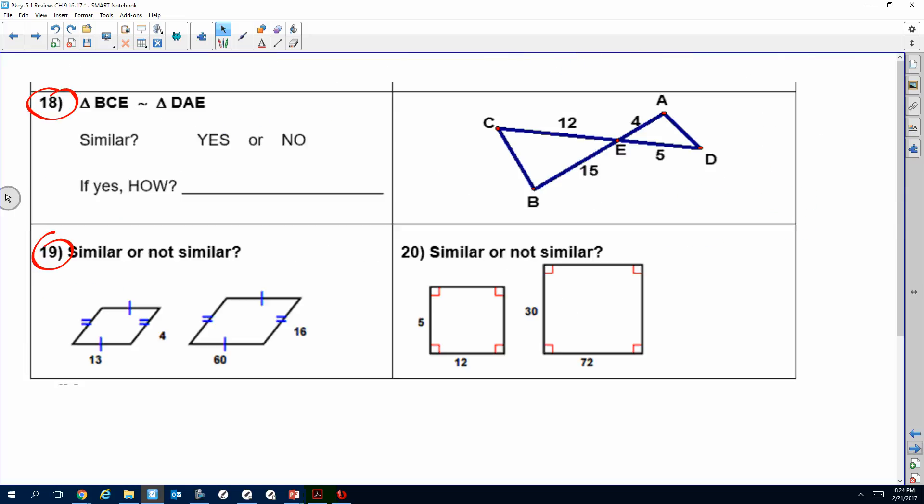Let's look at 18. They give us the statement, so we already know which parts. Now we just got to determine if it's similar. If yes, how? If I'm looking here, I have CE or EC corresponds with AE, so that means that would be 12 is to 4. Now I need the other part. We have EB right here, first and last, first and last, ED. So that's 15 to 5.